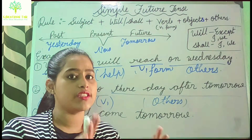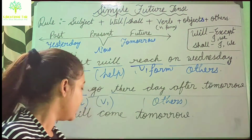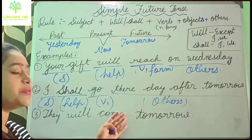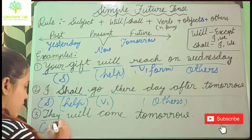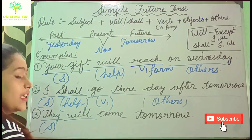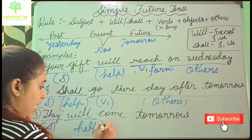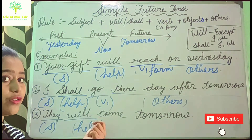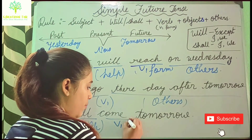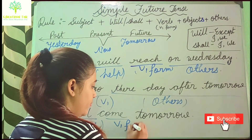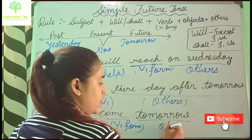Next example: 'They will come tomorrow.' Here 'they' is the subject. I have used 'will' as the helping verb because the subject is 'they'. Then 'come' is the V1 form, and 'tomorrow' is others. These are the examples of simple future tense.